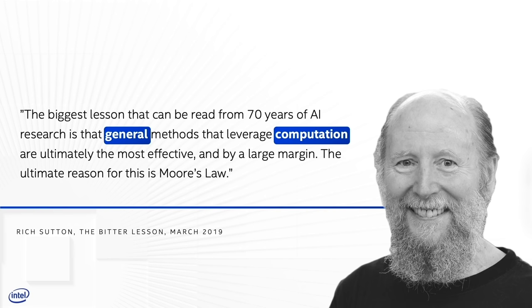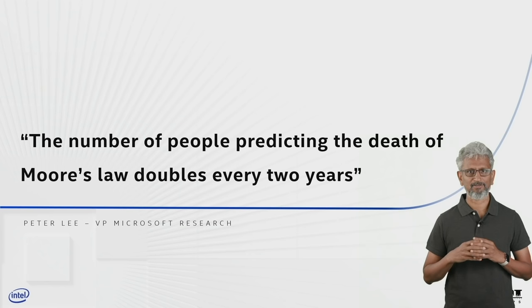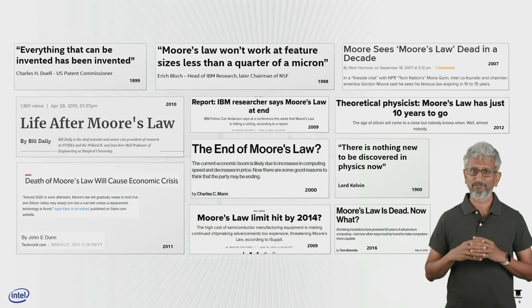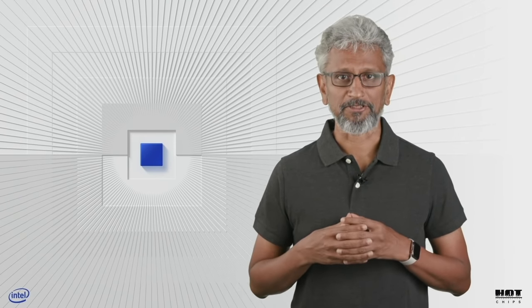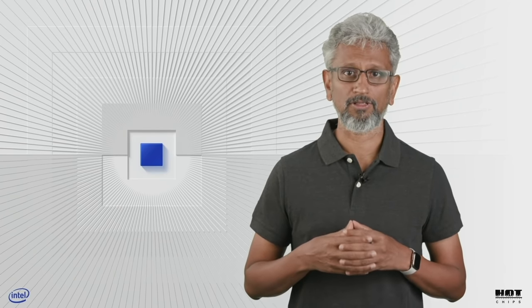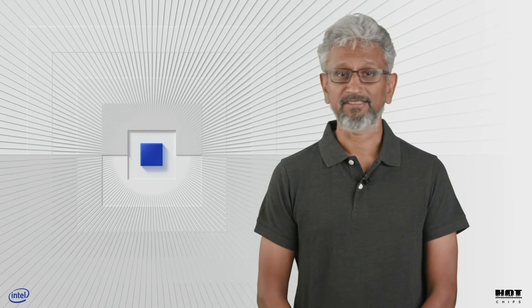Now let's get to the elephant in the room: Moore's Law. People have been skeptical about its future for a while. People have predicted the end of Moore's Law for decades. Looking at Moore's Law charts that the industry uses — the exponential technology entitlement — the key value metrics of performance per dollar and performance per watt have been growing at a much slower rate since the end of the Dennard scaling era. But while the curves are bending a bit, it's definitely not over.